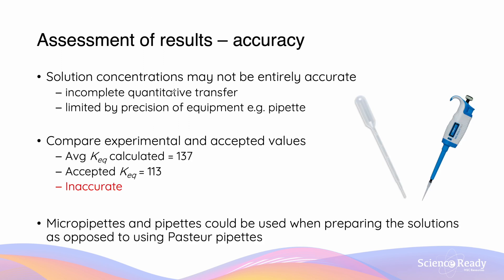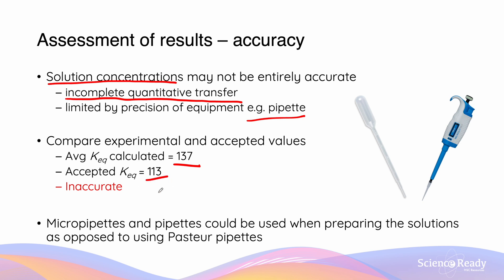We can determine the accuracy of our solutions by comparing them with our theoretical solutions, and we can determine the accuracy of our Keq values by comparing them with the theoretical Keq values. Reasons why our results may not be entirely accurate include incorrect solution concentrations due to incomplete quantitative transfer — meaning that in some step we might not have transferred everything needed — which may be limited by the precision of our equipment, such as the type of pipette used. Comparing our experimental and accepted values, the average calculated Keq was 137; however, the accepted Keq is 113, which is a relatively large difference, so we can say our results were inaccurate.